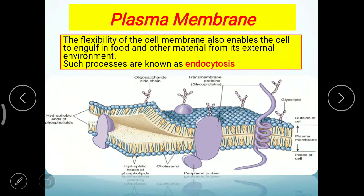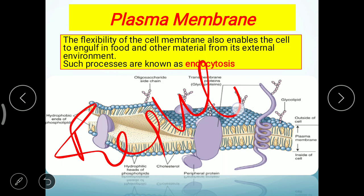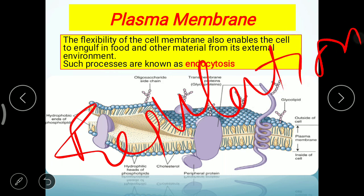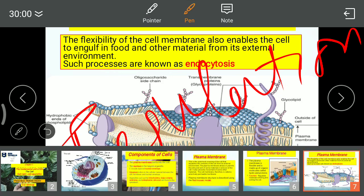अगला function है: the flexibility of the cell membrane enables food को अंदर पहुँचाने के लिए allow करती है — external environment से कोशिका के अंदर। इस process को endocytosis कहते हैं। और भी functions हैं जैसे कि regulation of passage through external environment।